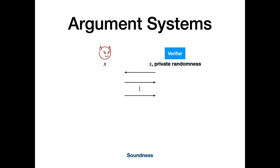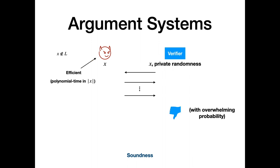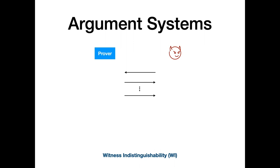For this argument to actually be convincing, it needs to be the case that for every efficient malicious prover, and for every x that's not in the language, the verifier should reject with overwhelming probability. We call this property soundness. In the context of cryptography, an argument system usually satisfies some sort of privacy requirement. One such privacy requirement is called witness indistinguishability, or WI.